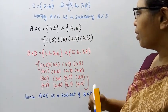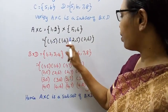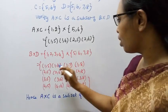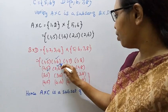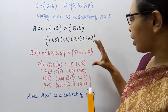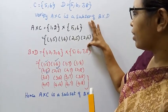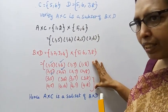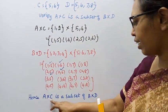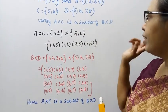To verify the subset relationship: 1,5, 1,6, 2,5, 2,6 from A cross C are all present in B cross D. All the ordered pairs from A cross C exist in B cross D. Hence A cross C is a subset of B cross D.